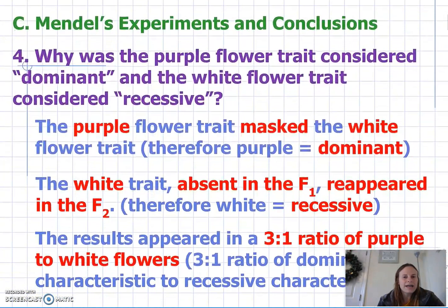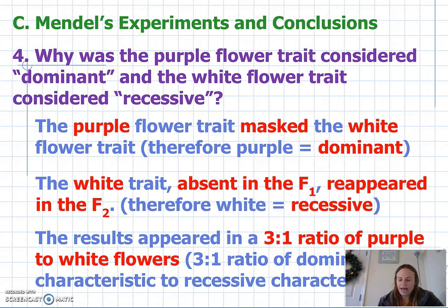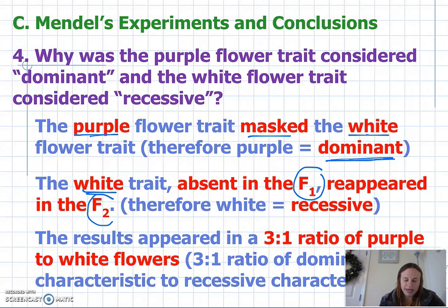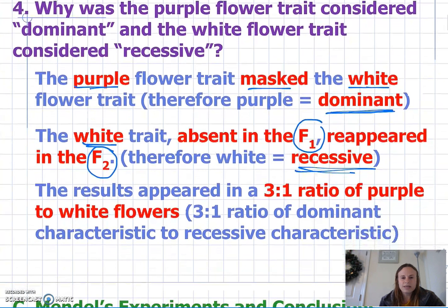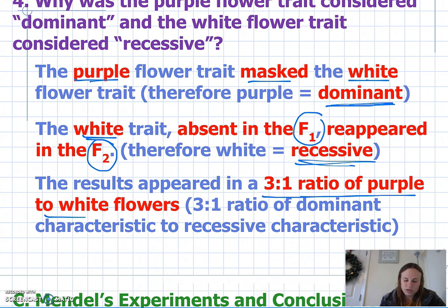Mendel wondered why that happened, and what he developed were the terms dominant and recessive. Because the purple flower masked the white flower, it was known as the dominant trait. The white trait, which was absent in the F1 generation but reappeared in the F2 generation, is called recessive. He discovered that the results appeared in a three-to-one ratio of purple to white flowers — in other words, a three-to-one ratio of the dominant characteristic to the recessive characteristic.